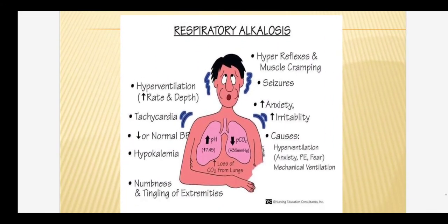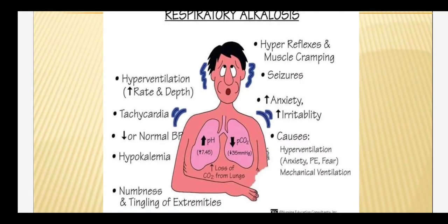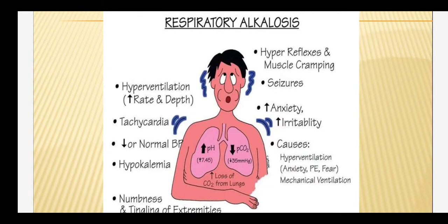In respiratory alkalosis, the pH is more than 7.45 and PaCO2 falls below 35 mmHg — this is an important finding. In acidosis, the PaCO2 was more than 45 mmHg. The causes of respiratory alkalosis include hyperventilation due to anxiety, fear, or excess mechanical ventilation, which can cause the person to go into respiratory alkalosis.